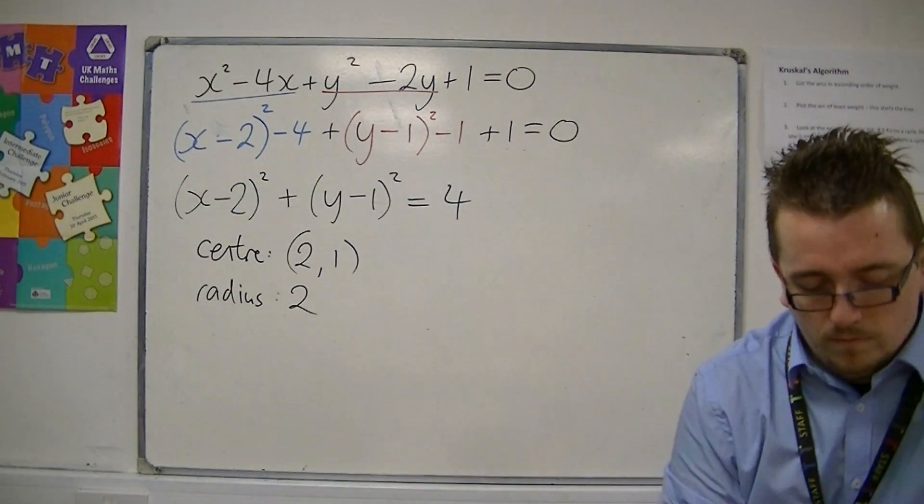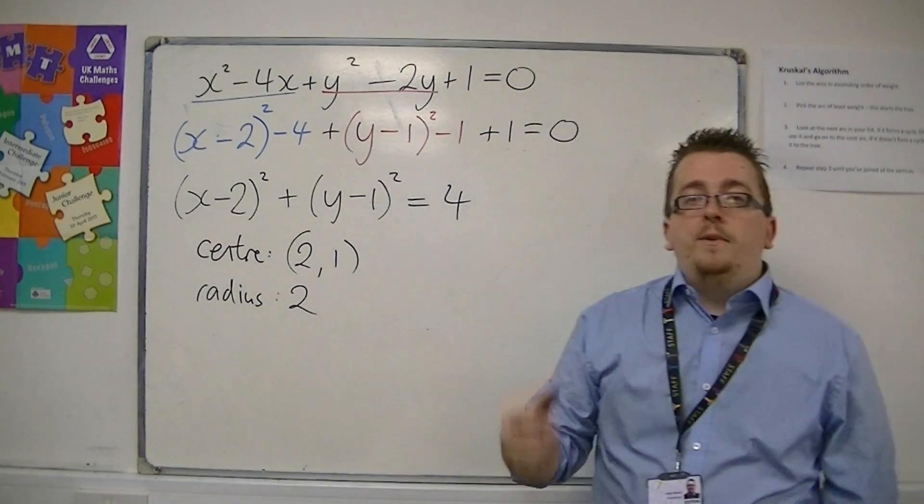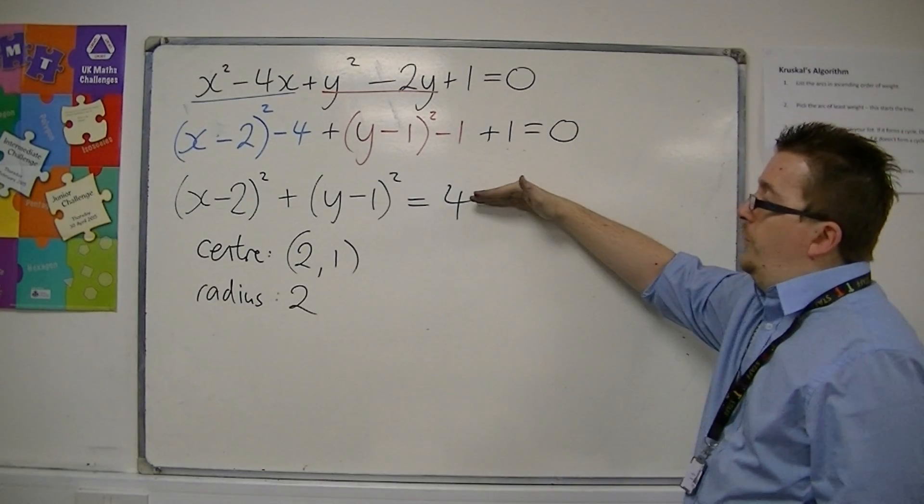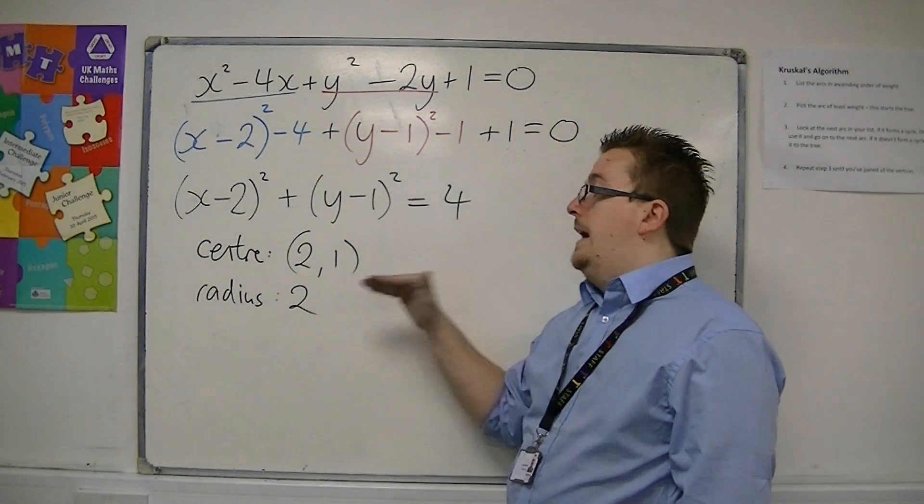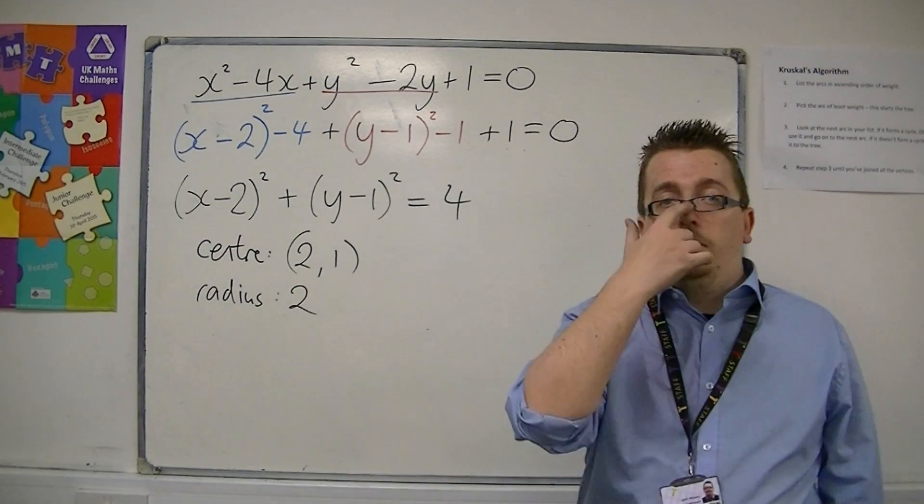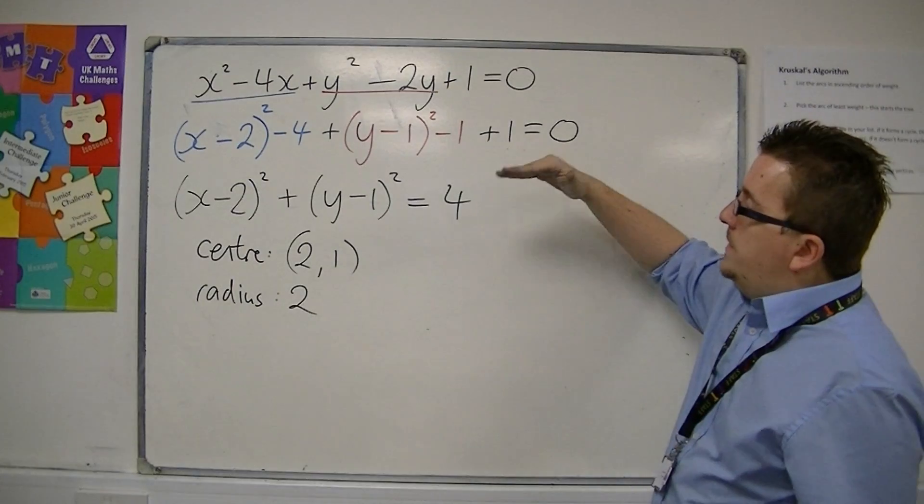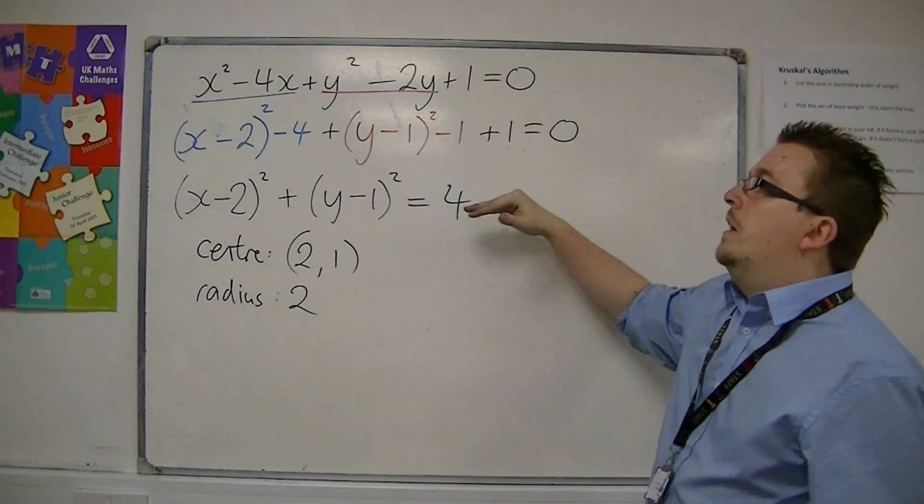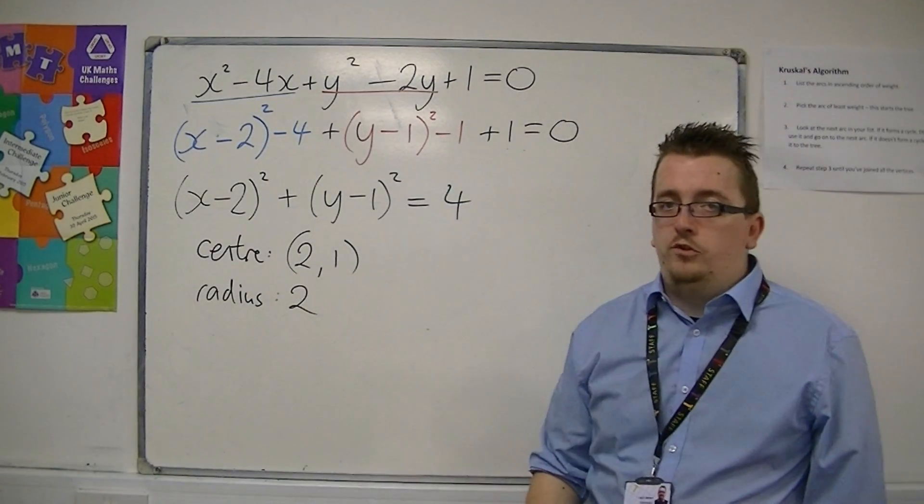So when you have an equation in this format, you must use completing the square in order to get it into this format, so you can tell the location of the centre and the length of the radius. So you need to be able to manipulate this equation into this format, and back again. But going back again is just expanding the brackets, so that's not too challenging.